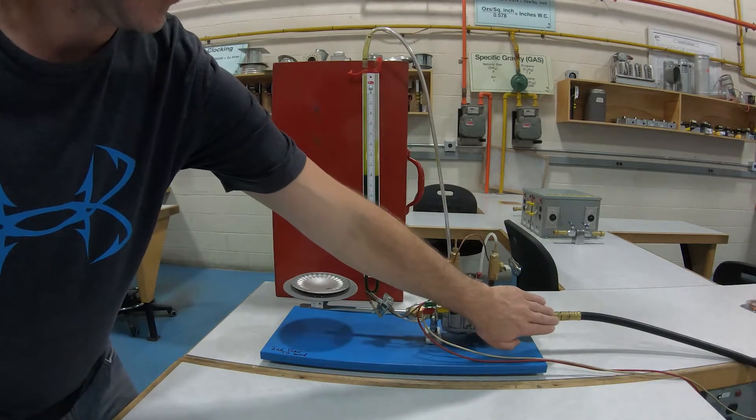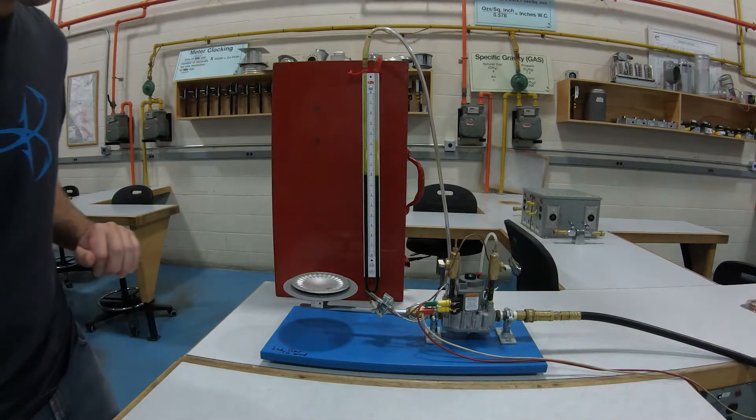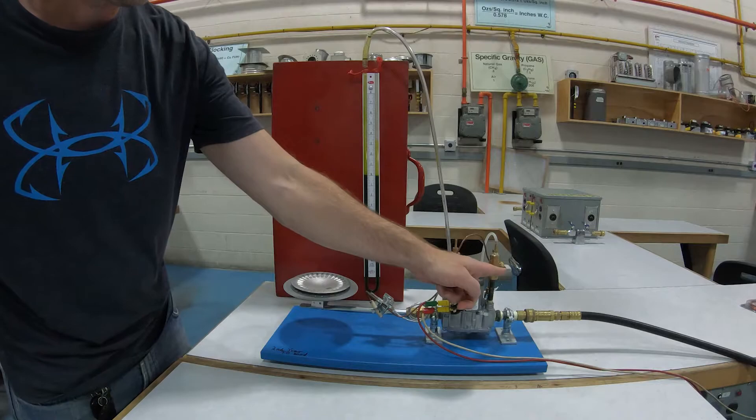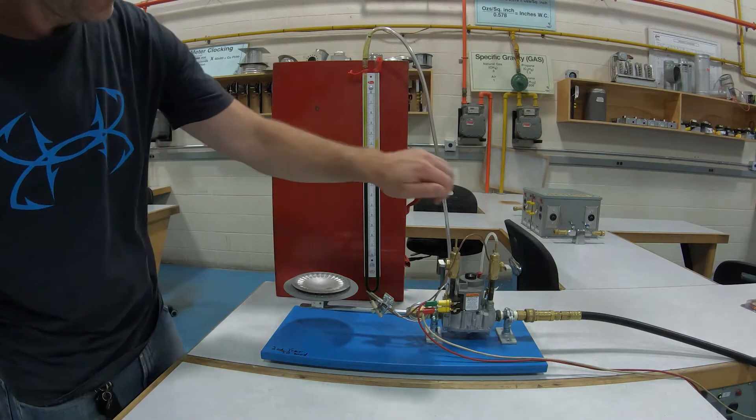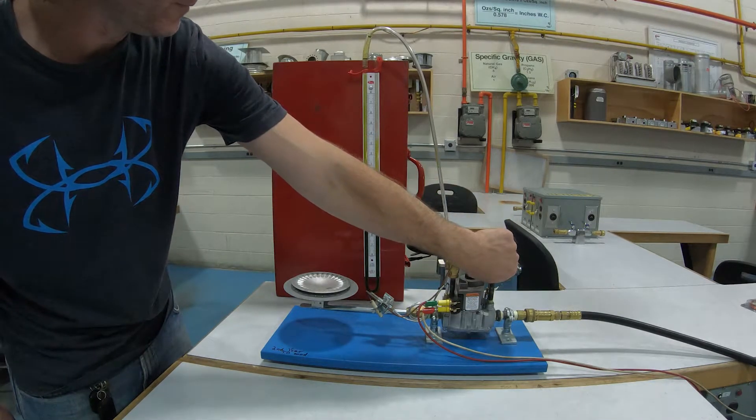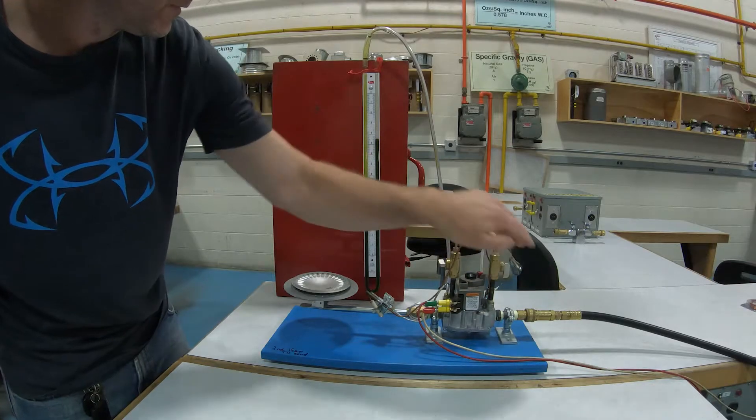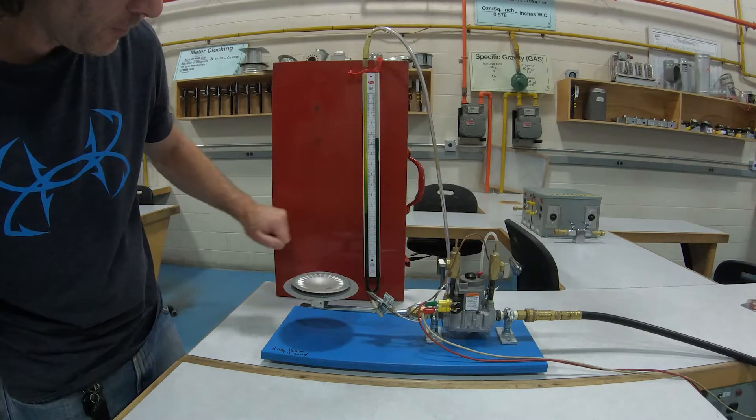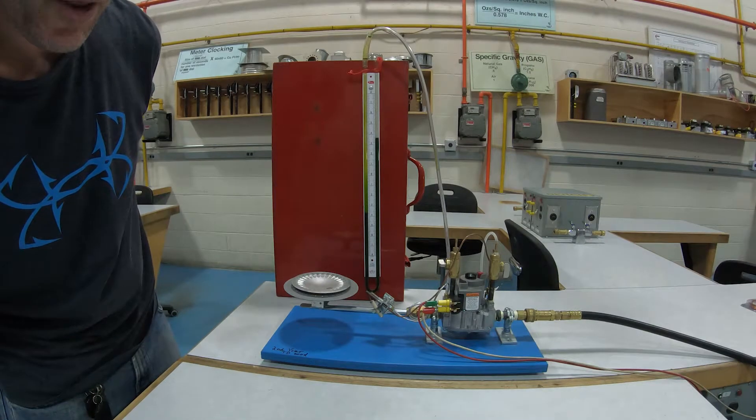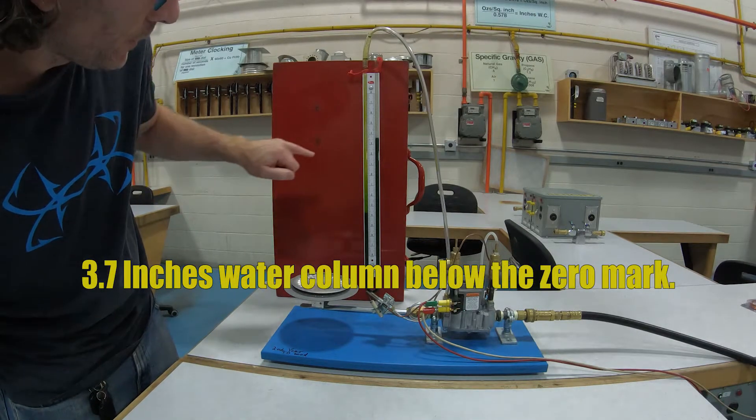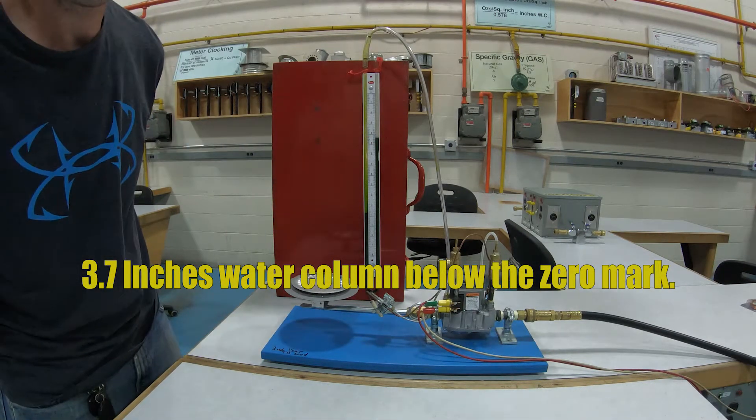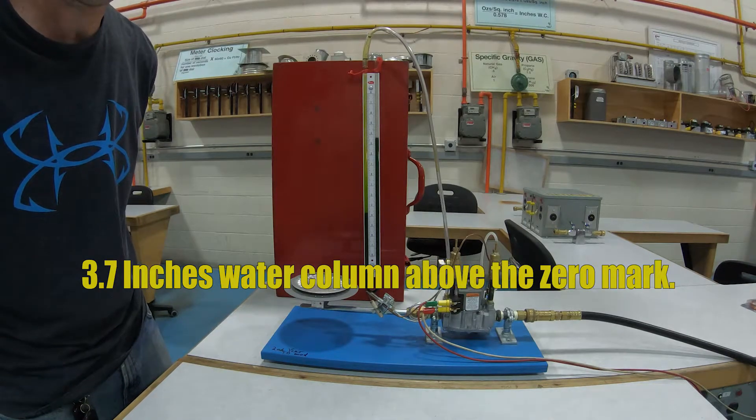This gas line is live, however I got the valve off. So what I'm going to do here is turn this on, and you'll notice the water went down to about this level here, which was 3.7 inches of water column, and it went up to that point there which is about 3.7 inches of water column.